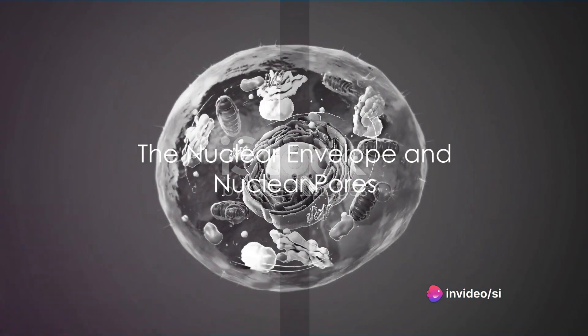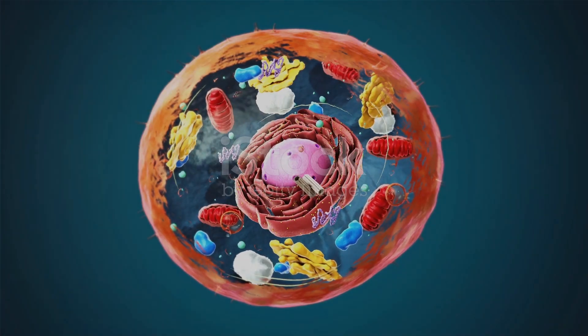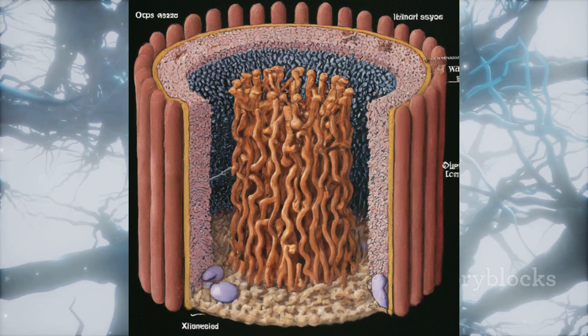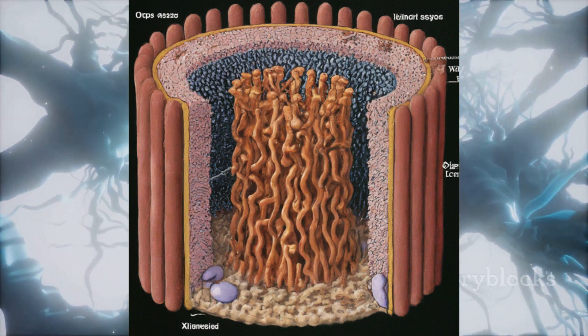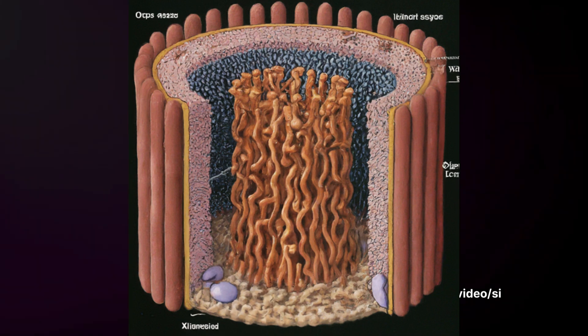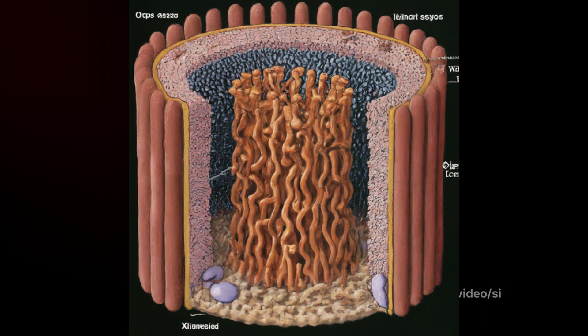Imagine the nuclear envelope as a fortress wall with guarded gateways. These gateways, or nuclear pores, are selective in what they allow to pass through. They control the flow of substances in and out of the nucleus, maintaining a delicate balance within the cell.